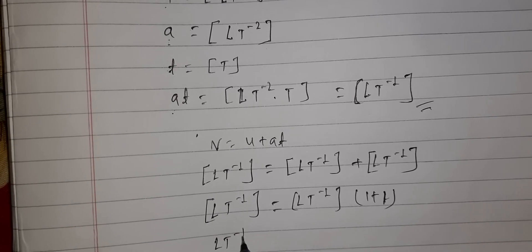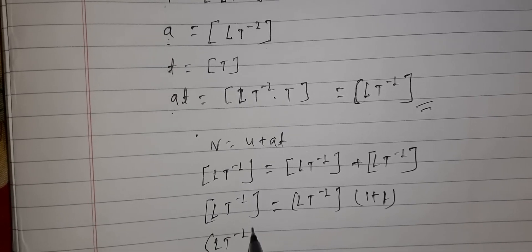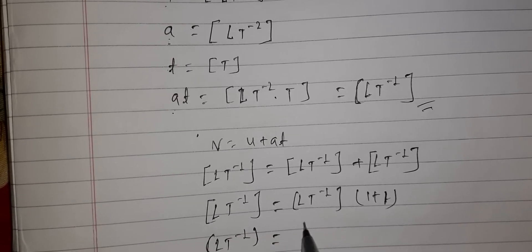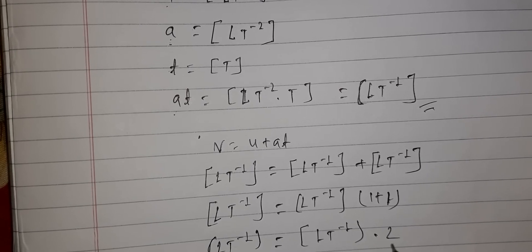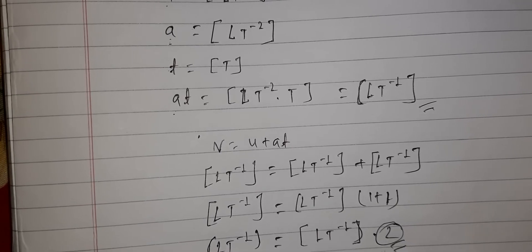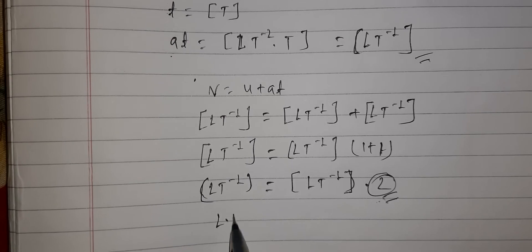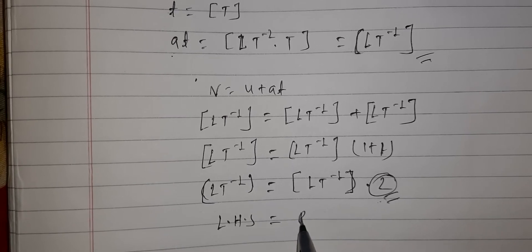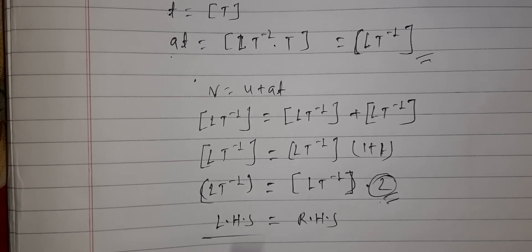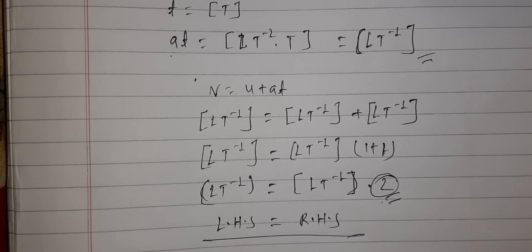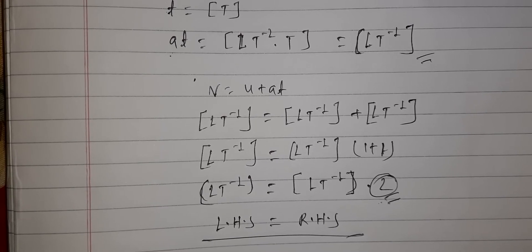Taking LT⁻¹ as common, the right-hand side becomes LT⁻¹(1 + 1), where 2 is a dimensionless constant. So LHS equals LT⁻¹ and RHS also equals LT⁻¹. Since LHS is equal to RHS dimensionally, this equation v = u + at is dimensionally correct.